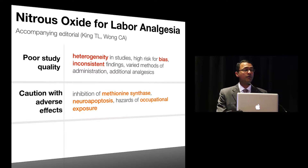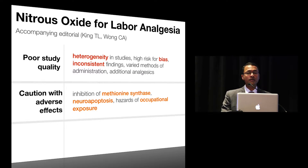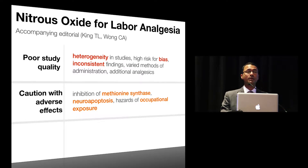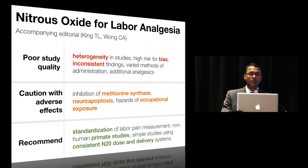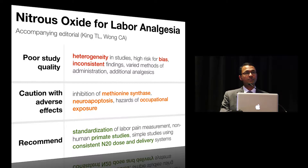The editorial also advised caution with adverse effects of nitrous oxide. We all know it inhibits methionine synthase, which is a critical component of DNA synthesis and catecholamine release. It also talks about the impact of nitrous oxide on neuroapoptosis in the developing brain, and the hazards of occupational exposure. The editorial recommended that we standardize our labor pain measurements, probably do some non-human primate studies, and use consistent nitrous oxide dose and delivery systems to give a much more meaningful idea of where nitrous oxide stands in current obstetric practice.